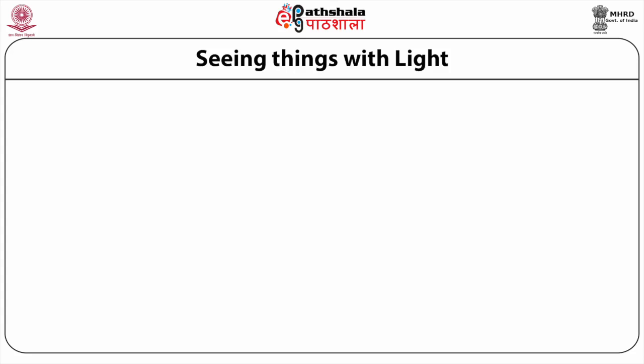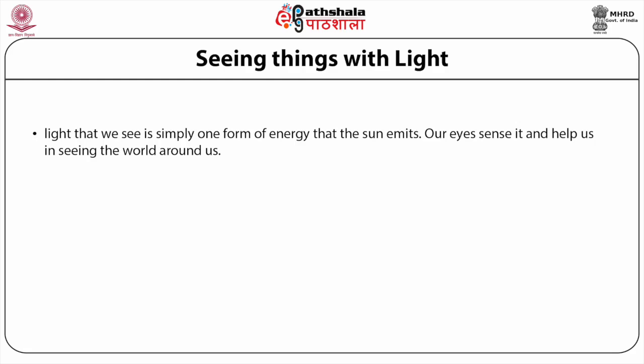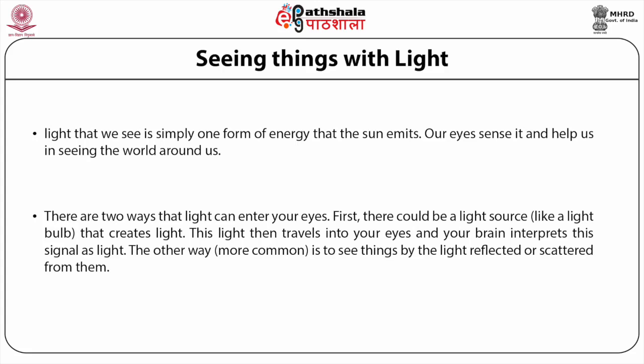Let's start with a basic concept: how do we see things? Light that we see is simply one form of energy that the sun or any other light source emits. Our eyes sense it and help us see the world around us. There are two ways light can enter your eyes. First, there could be a light source like a light bulb that travels into your eyes and your brain interprets this signal. The other, more common way is to see things by the light reflected or scattered from them.